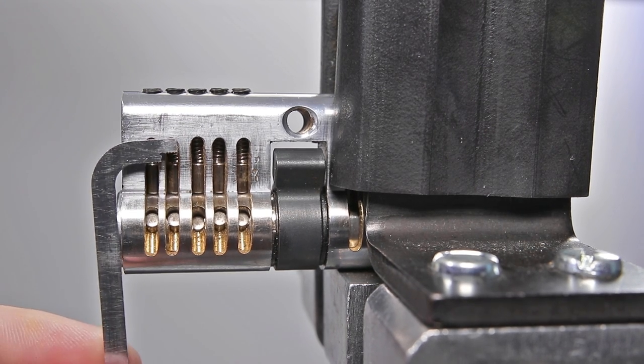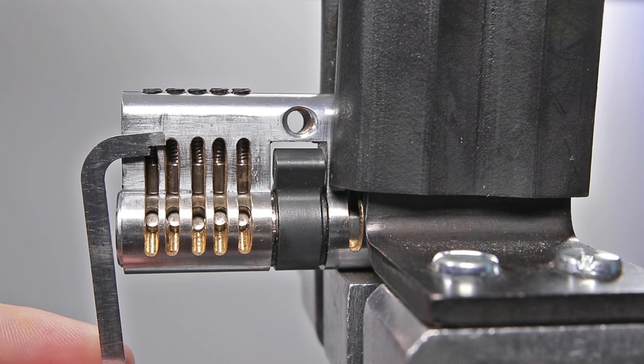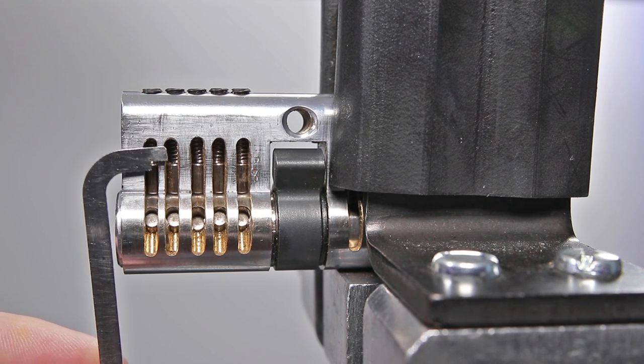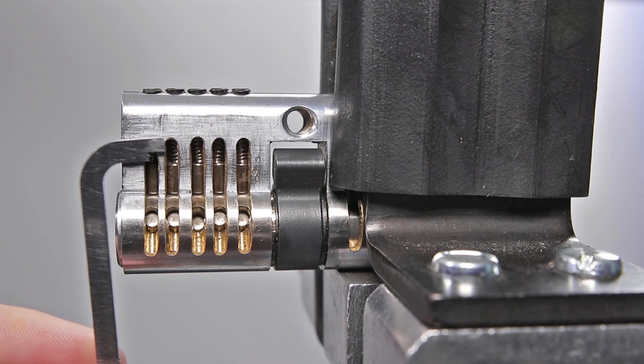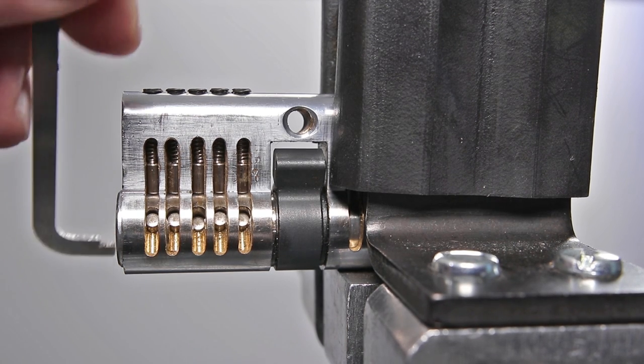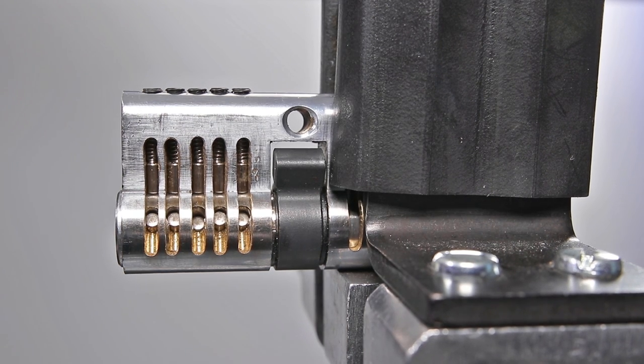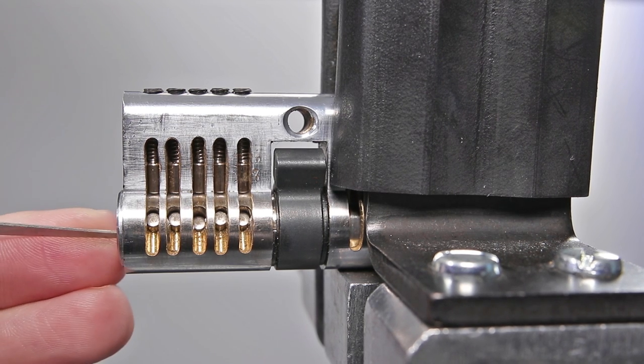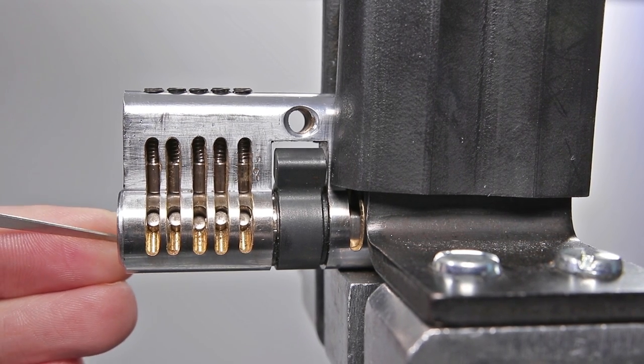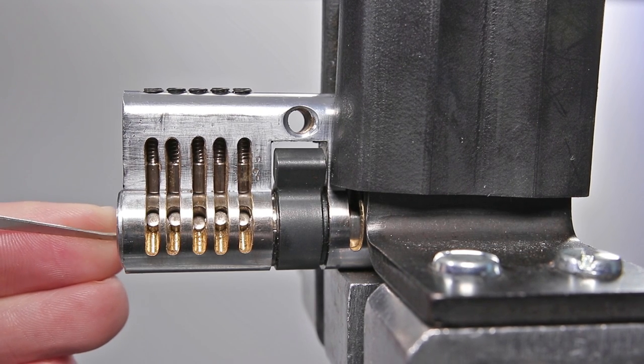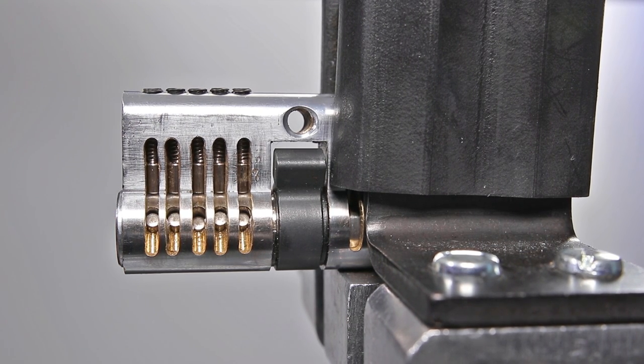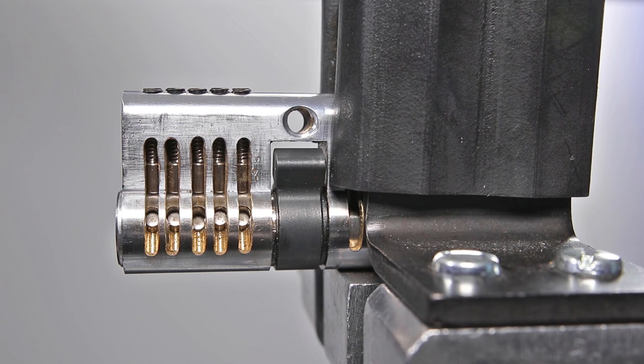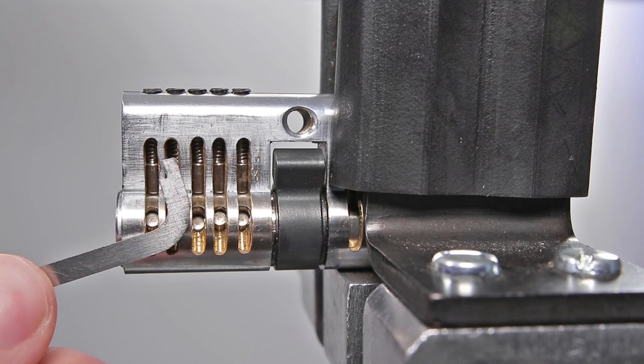You also want to try to use the correct tensioner, and a lot of locks top of the keyway tension offers you a lot of great feedback and a lot of great control. When you are trying to pick with bottom of the keyway tension, sometimes it is not going to give you enough room for your pick and it is just going to be getting in the way. The tensioner is going to be taking up too much room. So you're always going to want to try to utilize the appropriate pick and the appropriate tensioner.